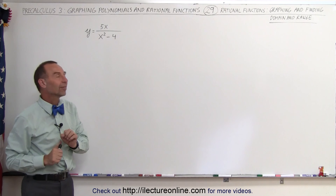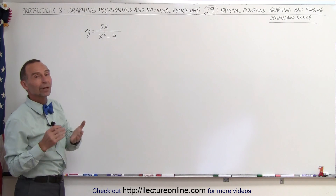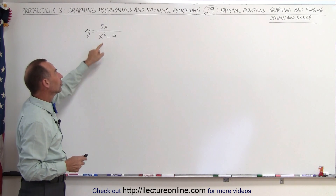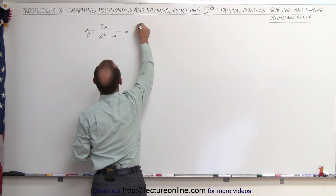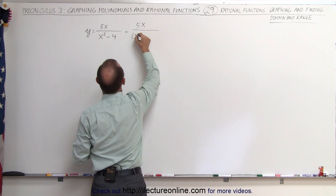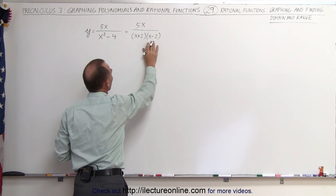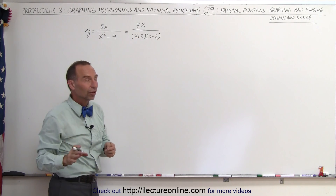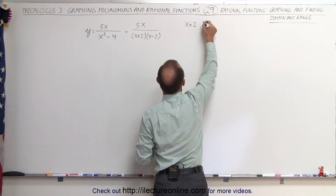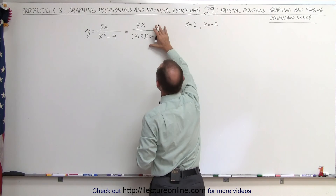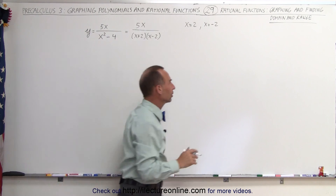Starting out, however, exactly the same way as before. When we graph a rational function, we look at the denominator and determine what x cannot be — that is, what makes the denominator equal to 0. So let's factor the denominator. This can be written as 5x divided by (x + 2)(x - 2), which means that if x is 2 or x is negative 2, the denominator equals 0, which it cannot be. So x = 2 and x = -2 both cause a violation of the zero-denominator rule.